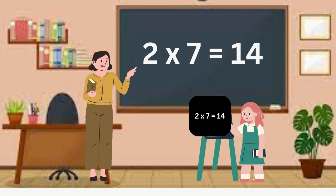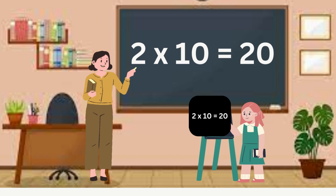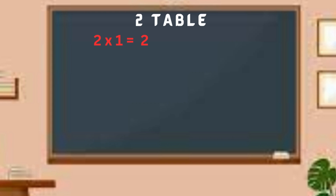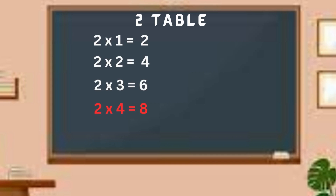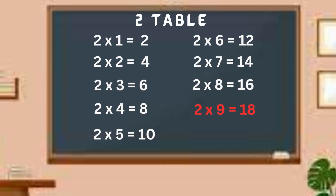Two sevens are fourteen. Two eights are sixteen. Two nines are eighteen. Two tens are twenty. One's are two. Two's are four. Three's are six. Four's are eight. Five's are ten. Six's are twelve. Seven's are fourteen. Eight's are sixteen. Nine's are eighteen. Ten's are twenty.